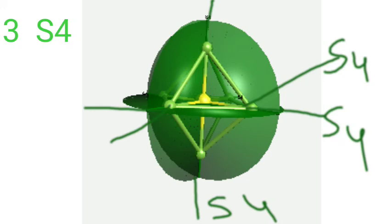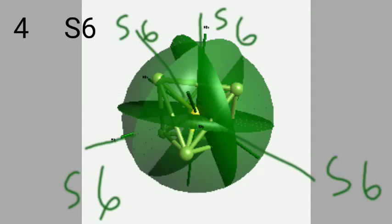There are also 3 S4 improper axes. The S4 axis is collinear with the C4 axis, because the C4 axis is perpendicular to a plane. So C4 and S4 are both collinear.